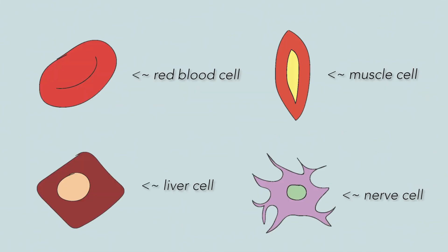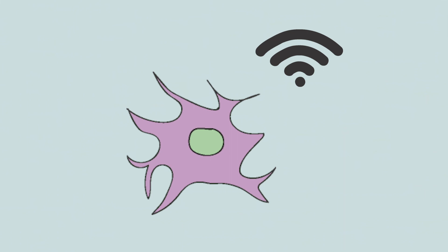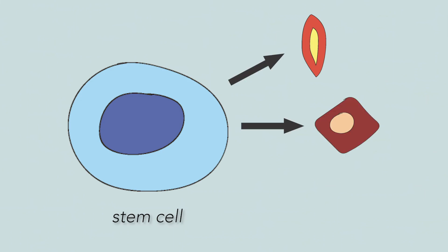Cells in your body have specific functions. Nerve cells send signals and remain the same throughout. However, stem cells are the only ones that can turn into other cells.